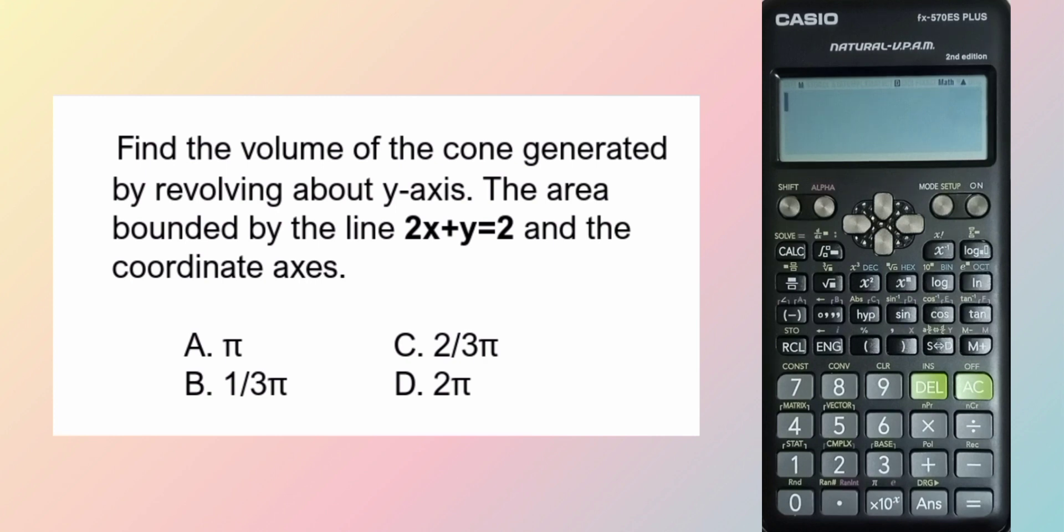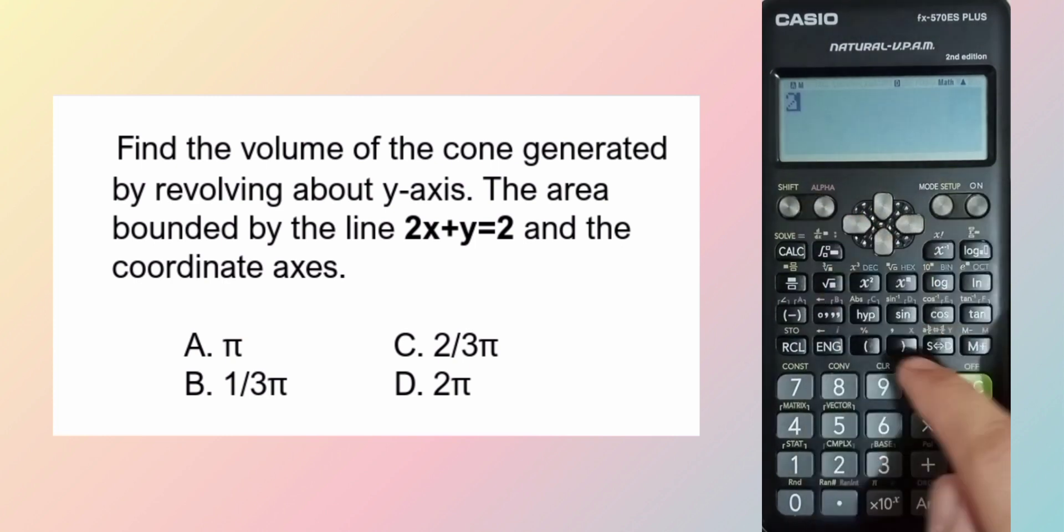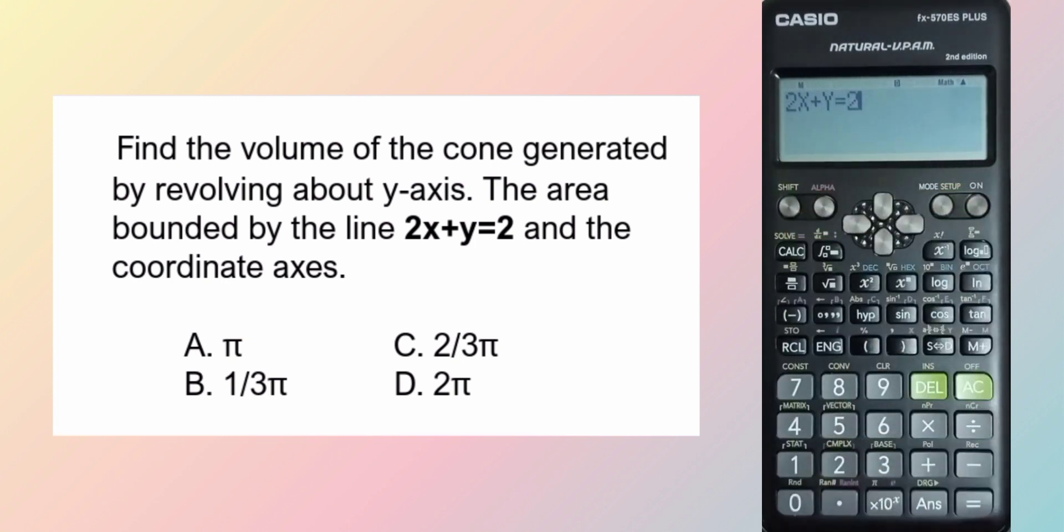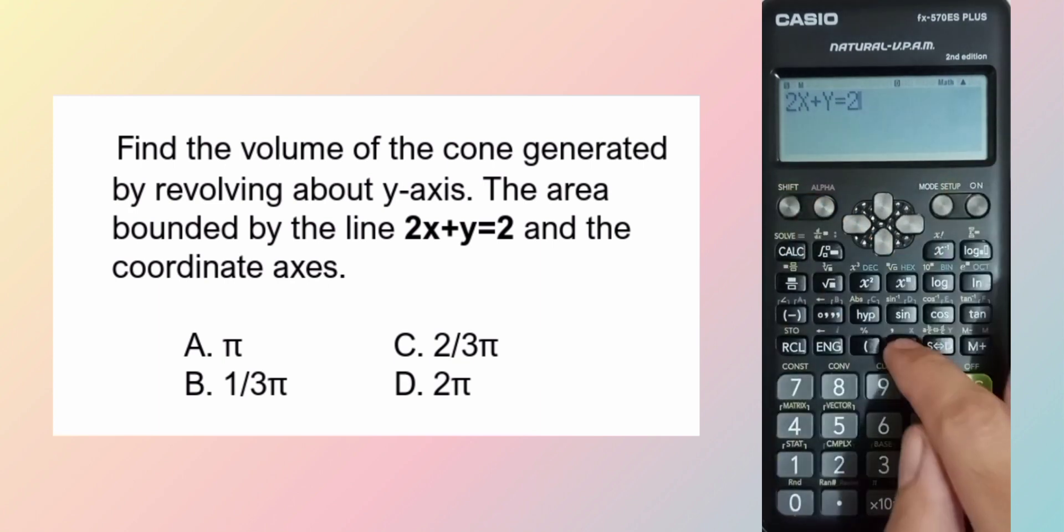With this 2x plus y equals 2 equation, we can solve for x and y, where x is equal to the radius of the cone and y as the height of the cone. So solving for x: